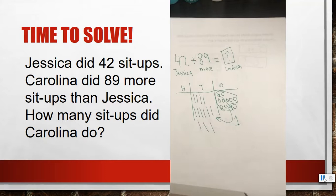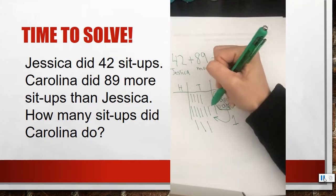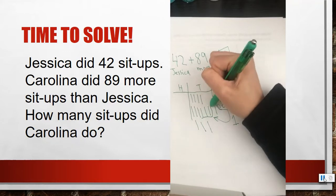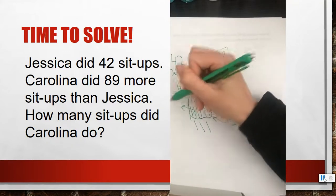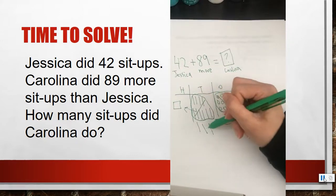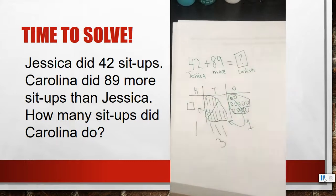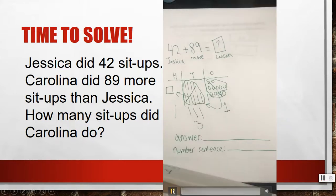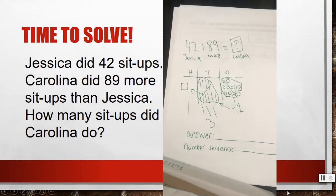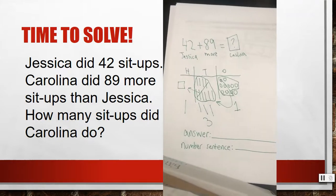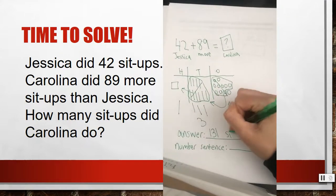Now I need to count my tens and see if I can make a new hundred. 1, 2, 3, 4, 5, 6, 7, 8, 9, 10 — I can change my tens for a hundred. So I have 1, 2, 3 tens left, and I have a hundred. So in this problem, we were trying to figure out how many sit-ups Carolina did. Carolina did 131 sit-ups.